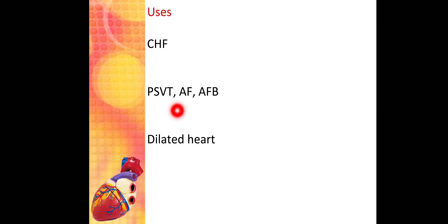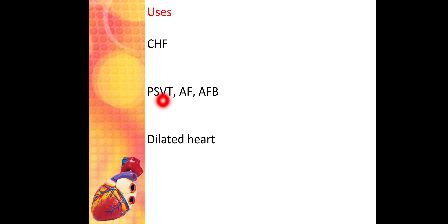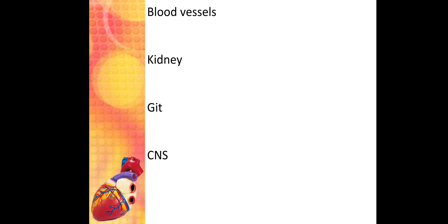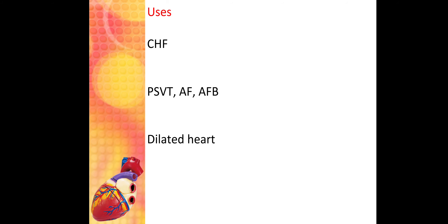Digitalis is also used in arrhythmias — details will be covered in the arrhythmia chapter. PSVT is paroxysmal supraventricular tachycardia, where a reentry chain causes tachycardia. Atrial flutter has a rate of 200–300 beats per minute, and atrial fibrillation has a rate of around 500 beats per minute. In all these conditions, digitalis is useful because it decreases the heart rate.